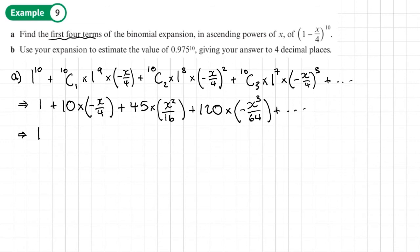So one, then the next term here where I've got the -X over 4, I'm going to write this as -10/4 X. Then the next term, I'm going to write it as +45/16 X^2. OK, and then for the last term, I'm going to write that as -120/64 X^3 plus dot dot dot.